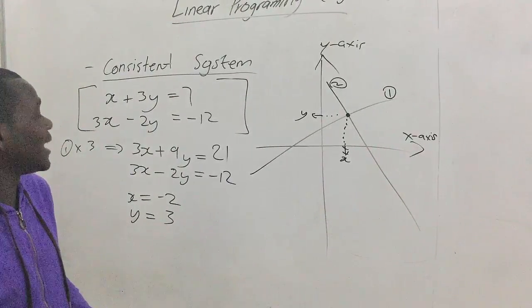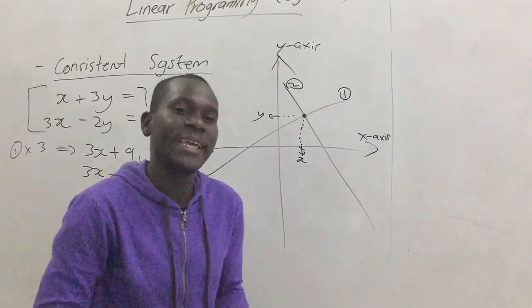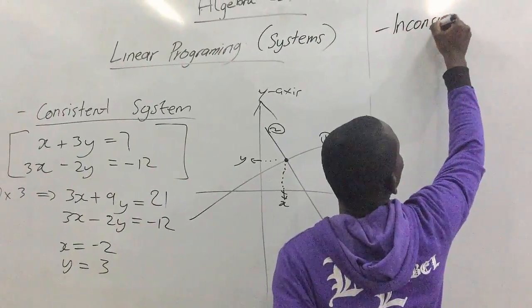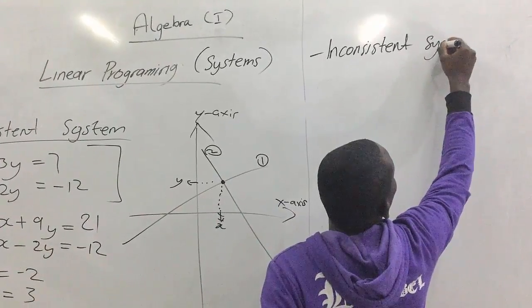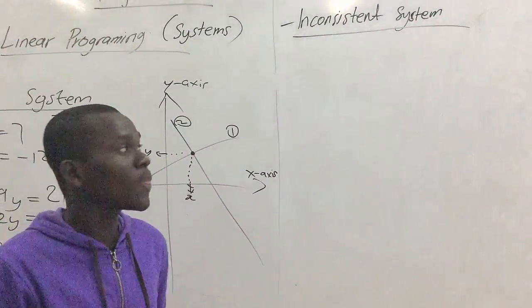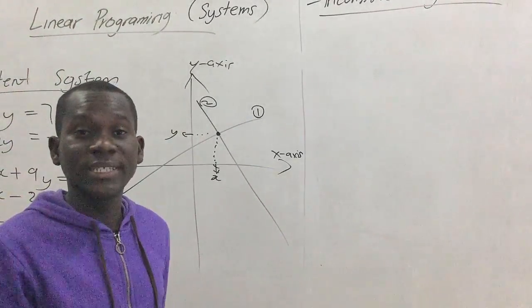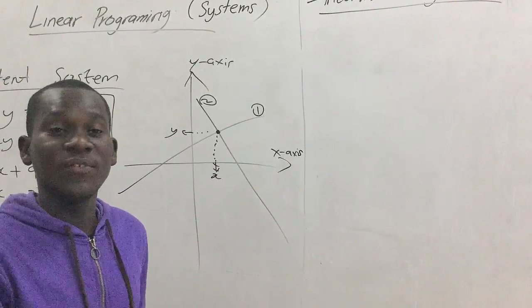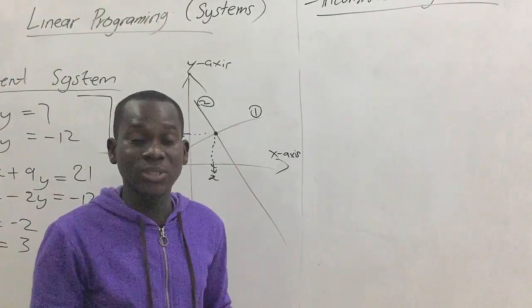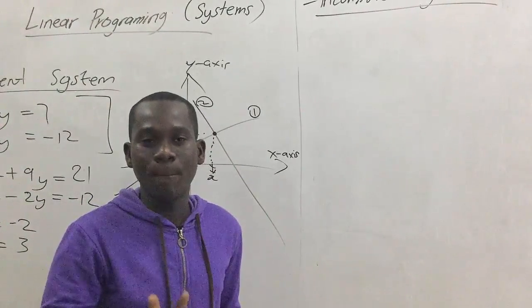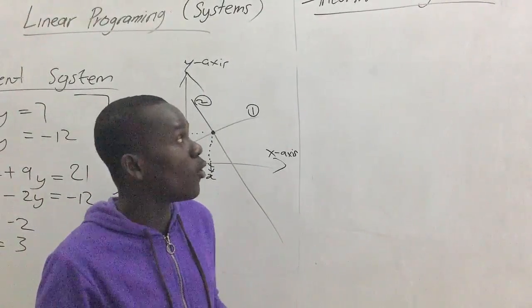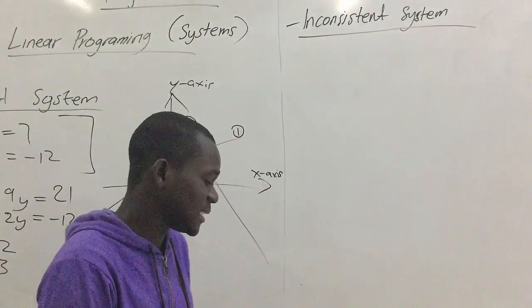Now let's talk about the second type of system — the inconsistent system. An inconsistent system gives us inconsistent solutions. This arises when we have two equations and, using the simultaneous equation method or any other method, we are unable to get a particular value for the two variables. It means that solution is inconsistent, and the two equations form an inconsistent system. Let's take an example and see.